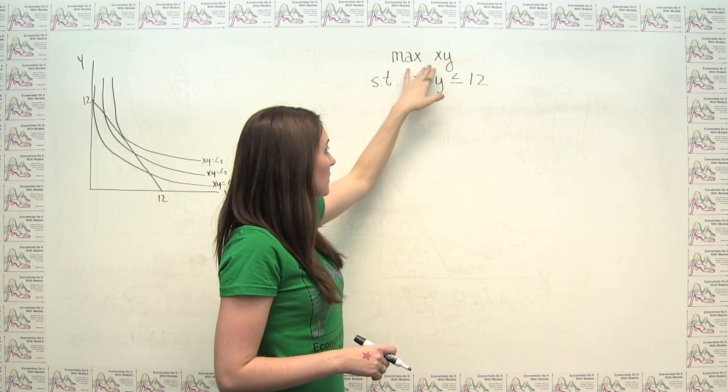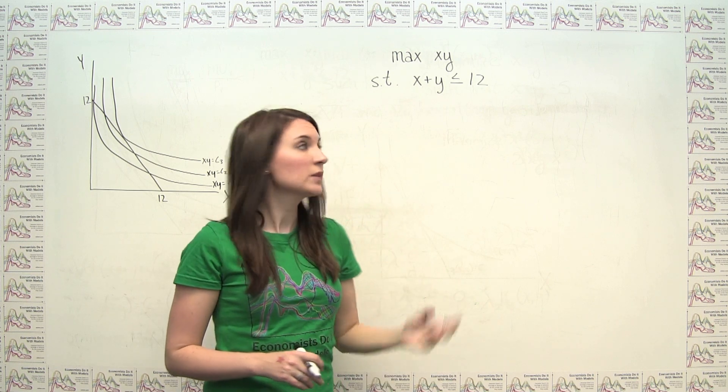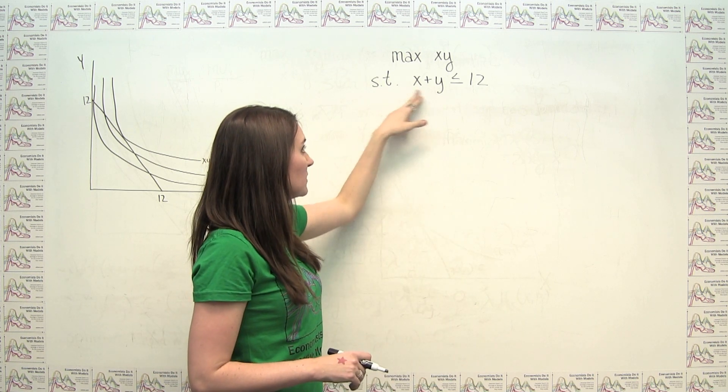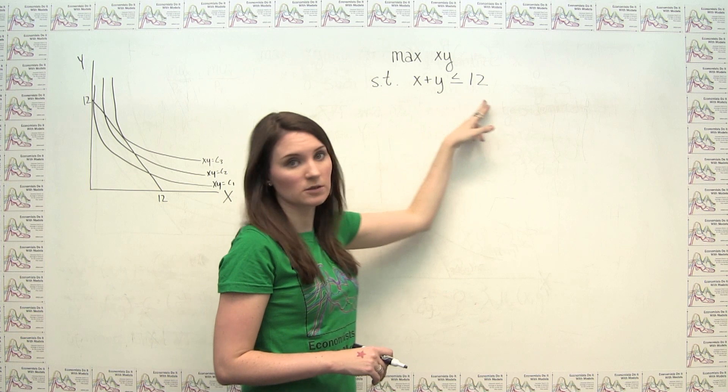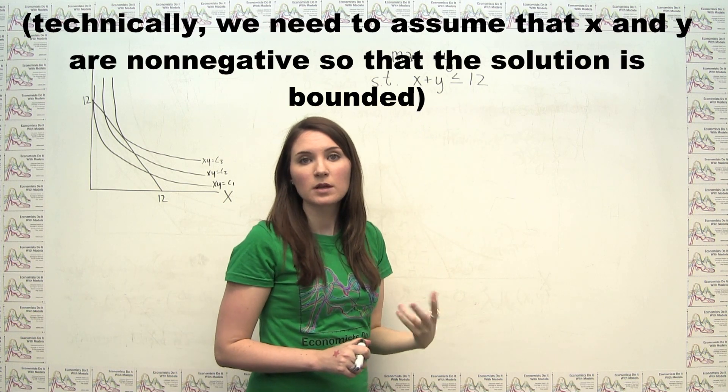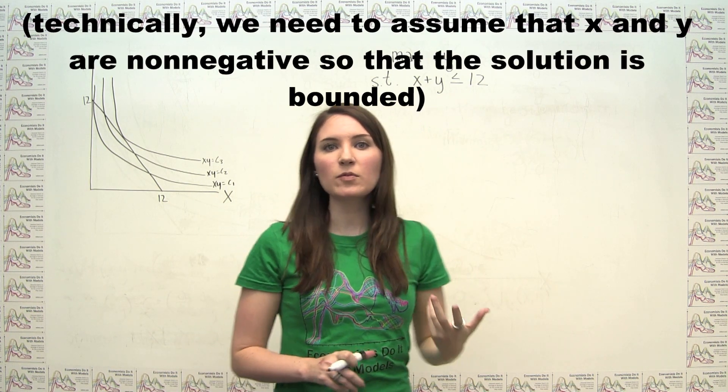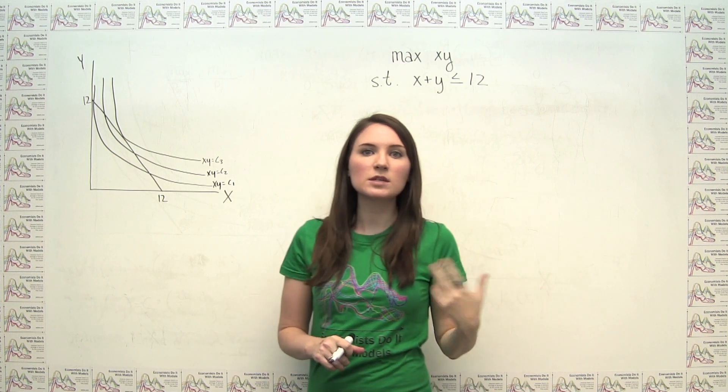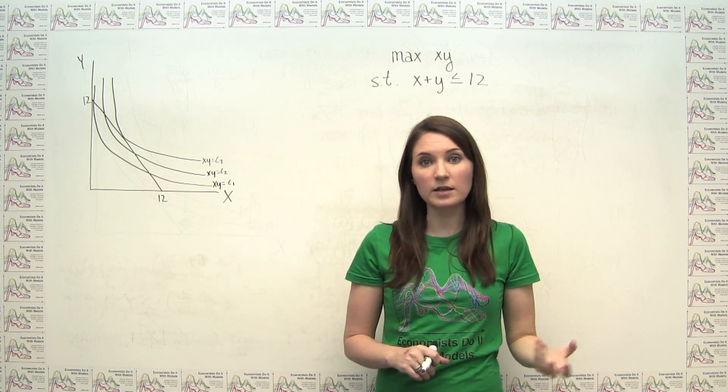We just want to maximize a quantity x times y, subject to the constraint that the sum of x and y is less than or equal to 12. This is very common and definitely represents what we would see with, for example, a utility maximization problem in economics.